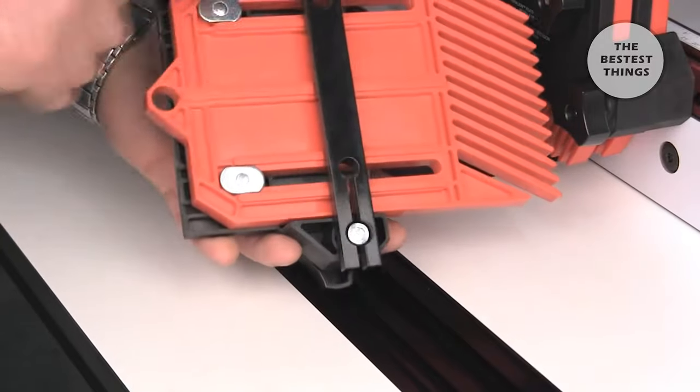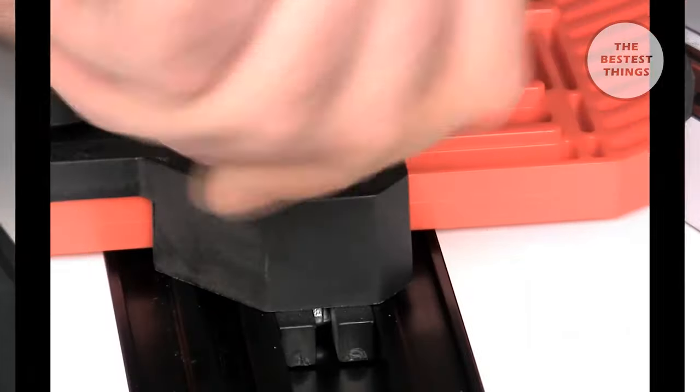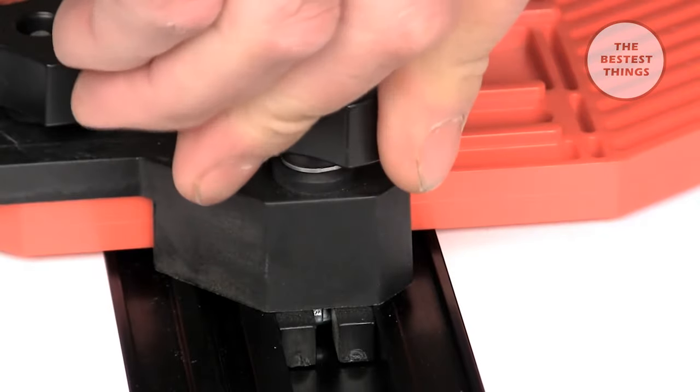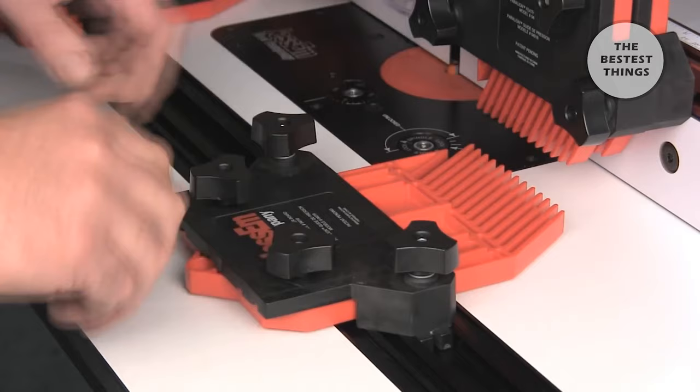To mount your Paraline Featherboards to a miter slot, install the miter bar and place them in your miter track. By tightening the clamping knobs, the miter bar expands locking your Featherboard securely in position on the in-feed and out-feed side.